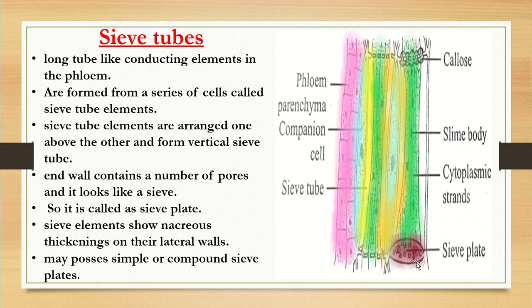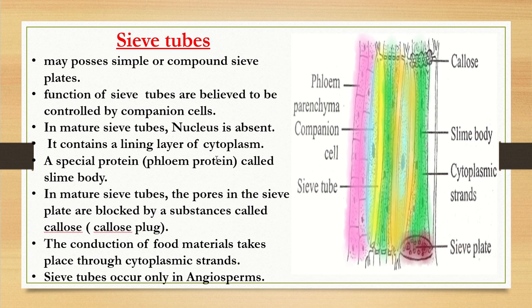The sieve plate may be simple or compound. It is believed that companion cells control sieve tube functioning. In mature sieve tubes, the nucleus is absent, and they contain only a lining layer of cytoplasm. A special protein present in the sieve tube is called the slime body — this dark dot-like structure is a specialized phloem protein.